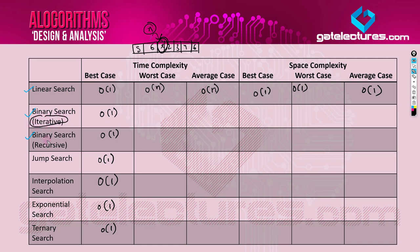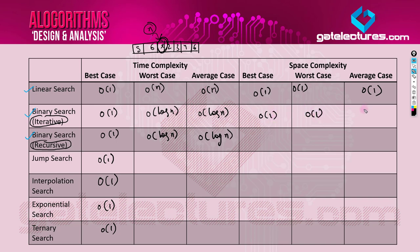The next searching algorithm is binary search. It can be iterative or recursive — that depends on your implementation, which we will see in upcoming videos. In binary search, the worst case takes O(log n) time in both iterative and recursive fashion, and the average case is also O(log n). However, there is a difference in space complexity: iterative binary search is O(1) space, but recursive binary search takes O(log n) space in both worst and average cases.